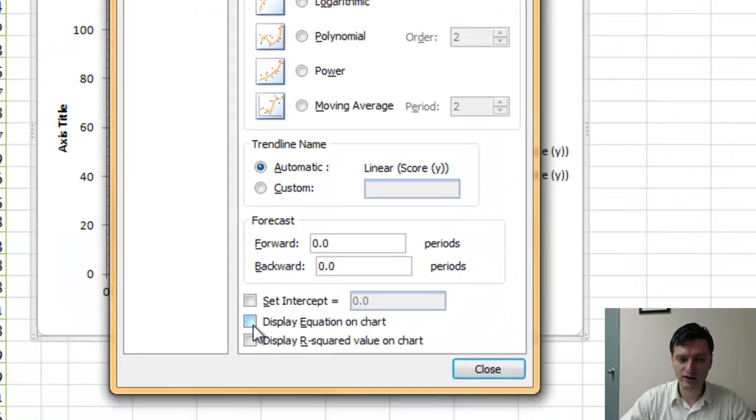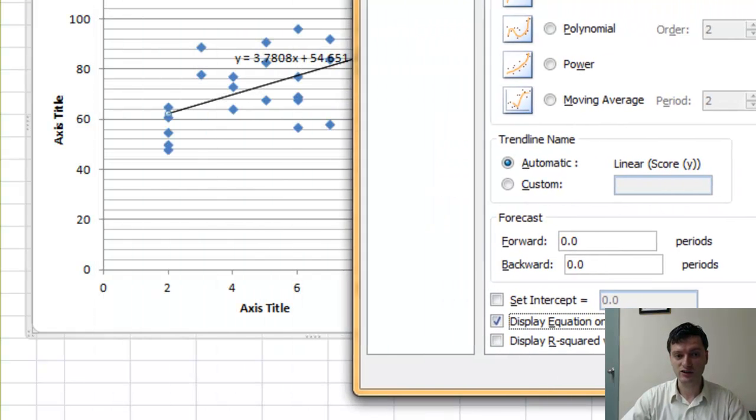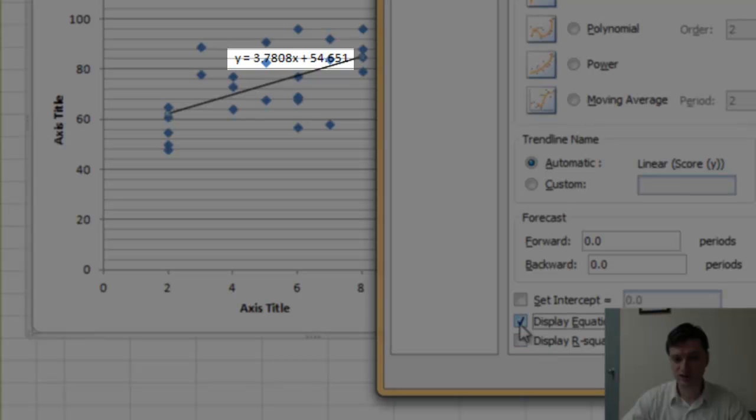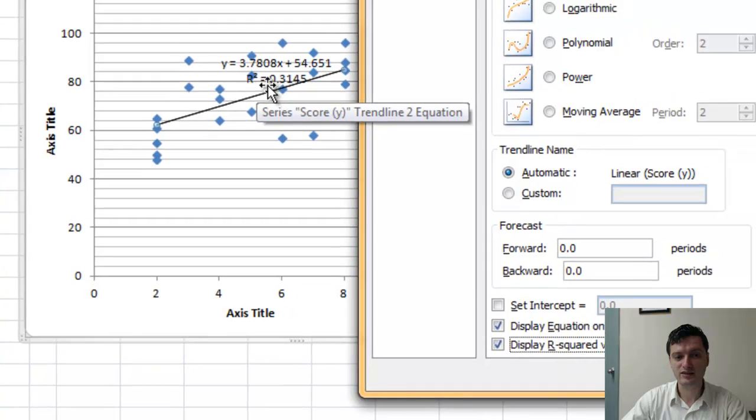You go all the way down here in the display equation on chart. That's where the equation is displayed now. So as soon as I check this box, the equation was displayed. I want to display the R-square as well, and that's going to come up right here at the bottom. That's it. That's the R-square.